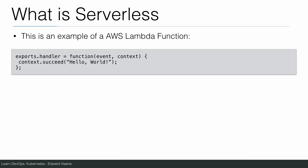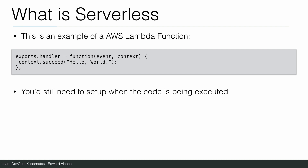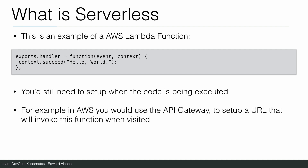This is an example of an AWS Lambda function. It just contains three lines of code. You define a function that takes the event and the context, which can contain information about how the function is invoked, and then you return hello world as the result of this function. You would still need to set up when the code is being executed — you have a function, but you still need to configure when it is going to run. In AWS, for example, you would use an API Gateway to set up a URL that will invoke this function when visited.